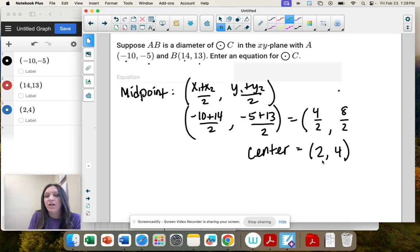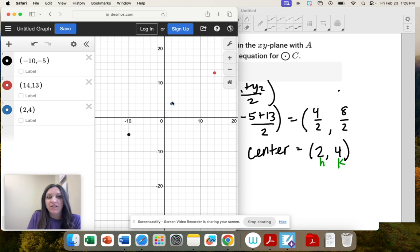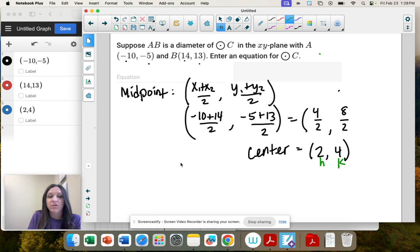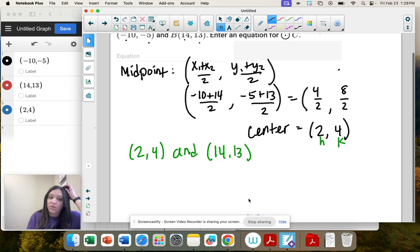That's going to be our h, k in our formula for the circle. So remember our formula, we need to find r. So we need to find the distance from the center, and now you can pick either point. It doesn't matter. I'm going to use 2, 4, and the positive ones, 14, 13. And now we're going to use the distance formula.